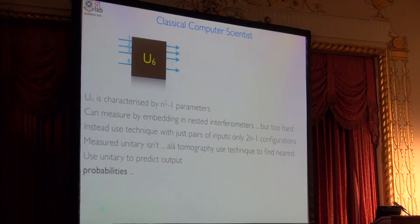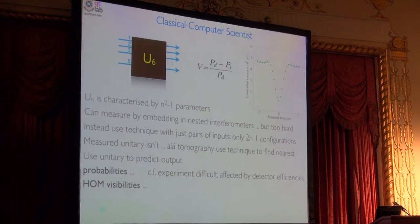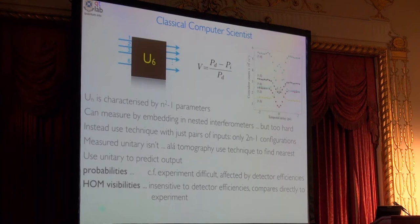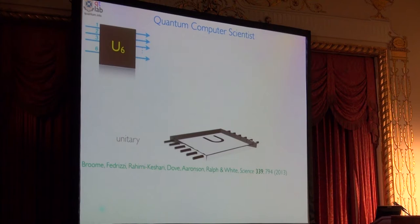You can use that unitary if you're the classical computer scientist to calculate probabilities. But the problem with probabilities is they get affected by detector inefficiencies and they're different detector to detector. Better to calculate the visibilities. If two photons arrive at a different time, they have one rate. If they arrive at a beam splitter at the same time where they coalesce, bosonic coalescence, we call that Hong-Ou-Mandel interference. That's just bosonic coalescence. That gives you a different rate. And the difference between those two rates gives you something we call the non-classical visibility. And when you calculate that, that takes out the detector inefficiencies.